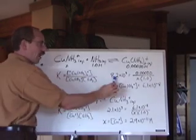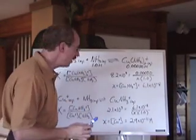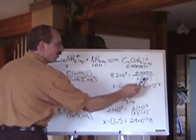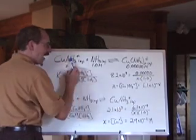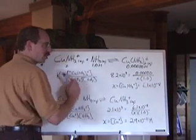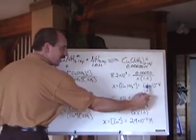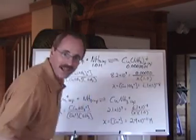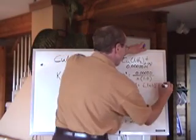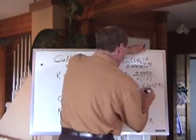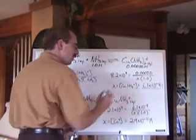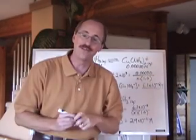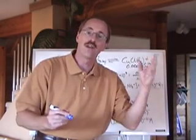And since we know the K value, 8.2 times 10 to the 3, and we know the other two concentrations at equilibrium, we can find for X, and X is the concentration of that ion, which will, in the end, get 6.1 times 10 to the negative 8. That is the moles per liter, the concentration of that species in solution, and we've now found that third one.